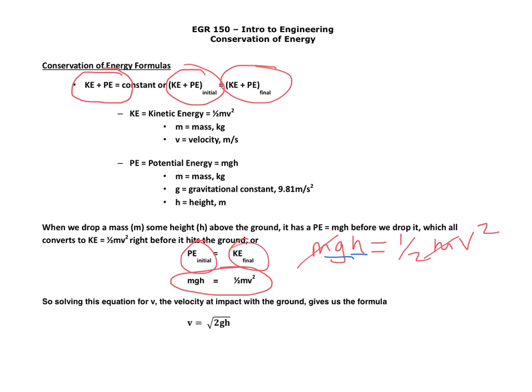So when we solve that equation, we then get the equation that's shown here that velocity is equal to the square root of two times the gravitational constant at that point times the height.